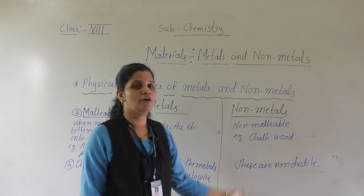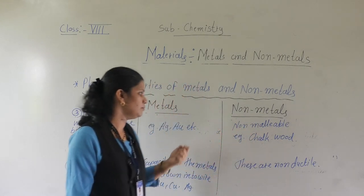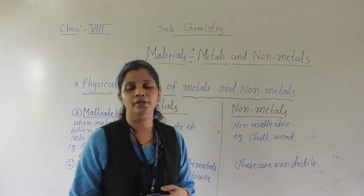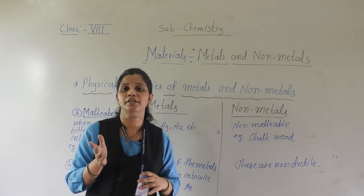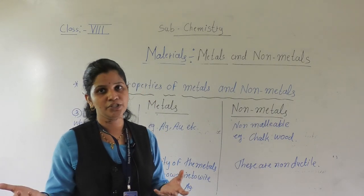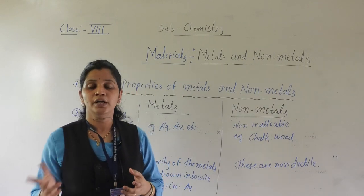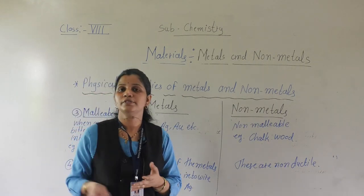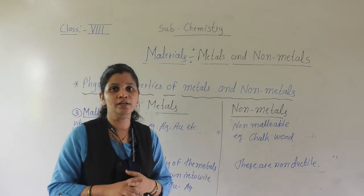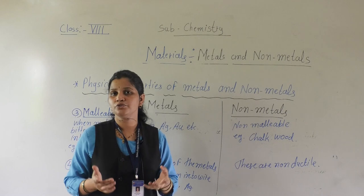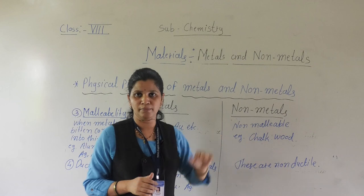Non-metals are non-malleable. For example, chalk and wood. If you start beating on wood, it will not convert into a thin sheet — it will make small pieces. If you take chalk and start beating it, it will not convert into a thin sheet. Why? Because it is a non-metal and does not show the property of malleability. So, non-metals are non-malleable.